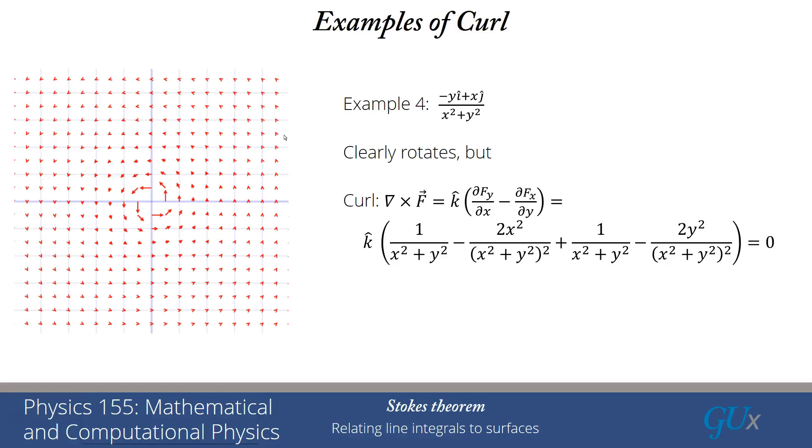Now, let's add it together. I can group together the 1 over x squared plus y squared and the 1 over x squared plus y squared. I get 2 over x squared plus y squared. If I group together the other terms, I'll get 2 times the quantity x squared plus y squared over x squared plus y squared squared. That has a factor of x squared plus y squared in the numerator and in the denominator. I can cancel those, and I'm left with minus 2 over x squared plus y squared. That cancels the first term. And so the net result is that this thing has 0 curl.